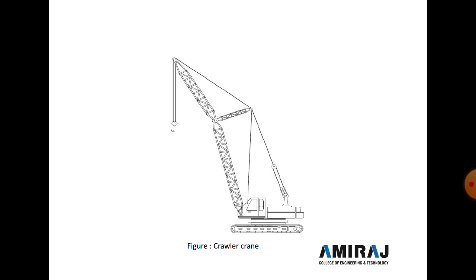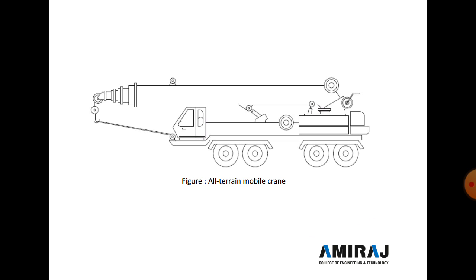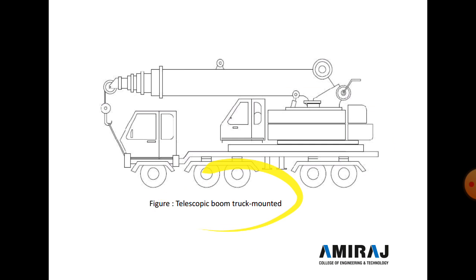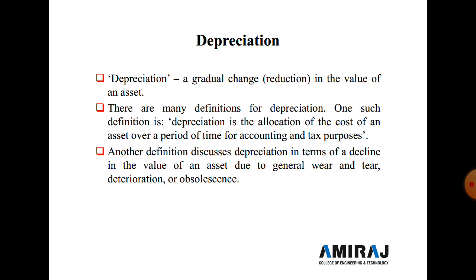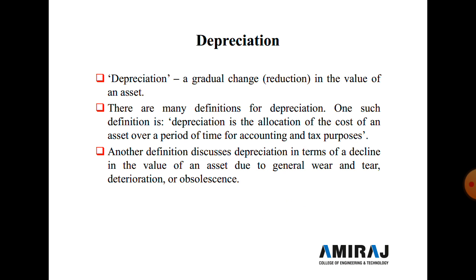The rough terrain mobile crane is a small type of mobile crane generally used in industrial areas for lifting purposes. The all-terrain mobile crane looks similar to the telescopic mobile crane, but has less capacity compared to the telescopic mobile crane.